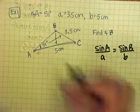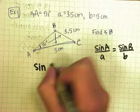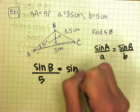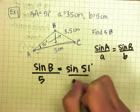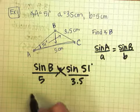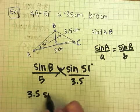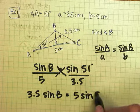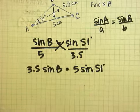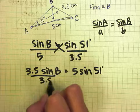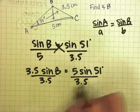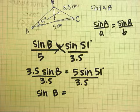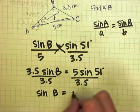Now when you do this, you would say sine of B over 5 equals sine of 51 over 3.5. You would cross multiply, so you get 3.5 sine B equals 5 sine 51 degrees. You divide both sides by 3.5 to get sine B by itself. So you have sine B equals, on my calculator, that comes out to 1.11.